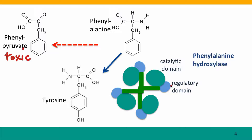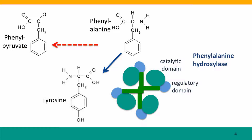What the regulatory domain does is bind phenylalanine when phenylalanine concentrations are high. It doesn't bind when it's low, but when it's high, the regulatory domain binds, senses the high concentration, and basically kicks the catalytic domain into high gear so that phenylalanine hydroxylase becomes much more active when there's too much phenylalanine in its environment — which makes sense because phenylalanine can otherwise lead to a toxic product.